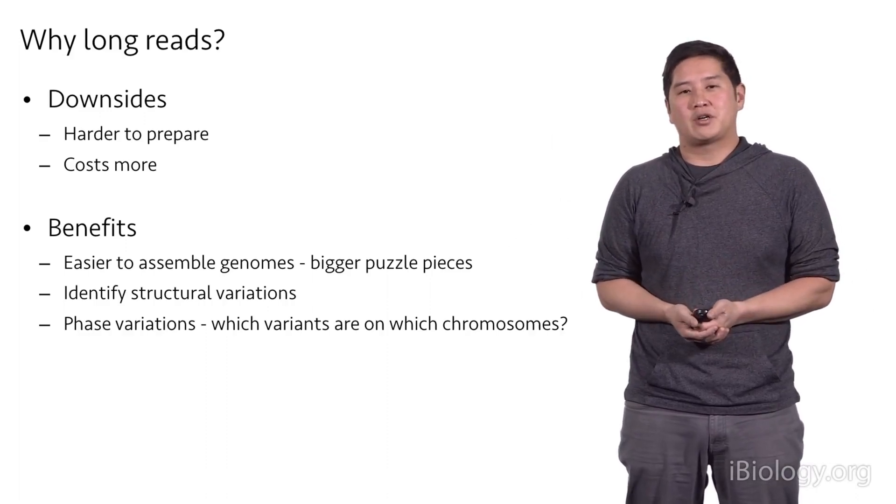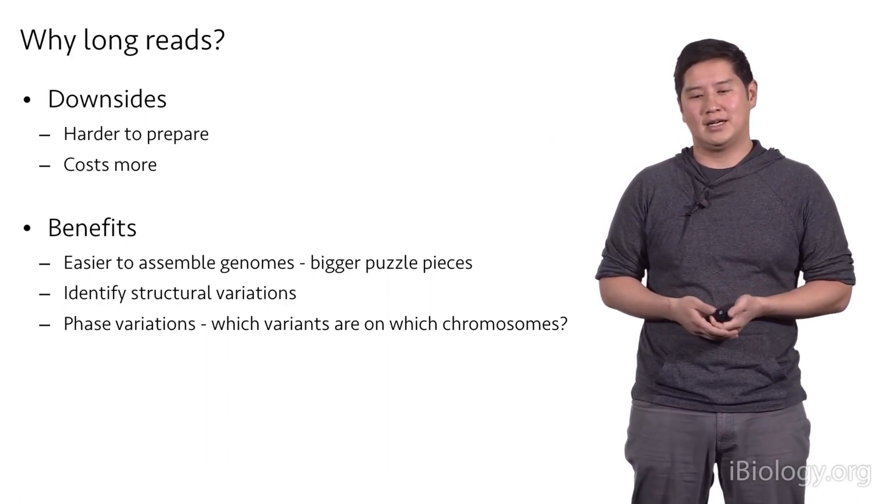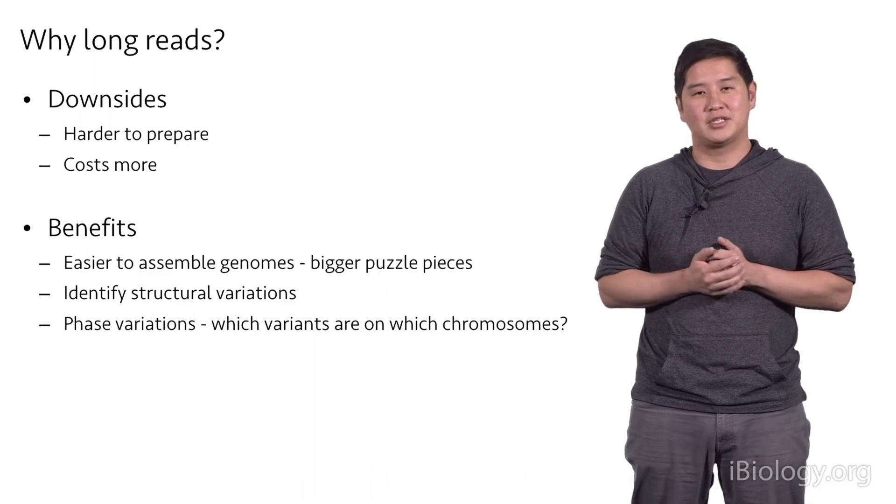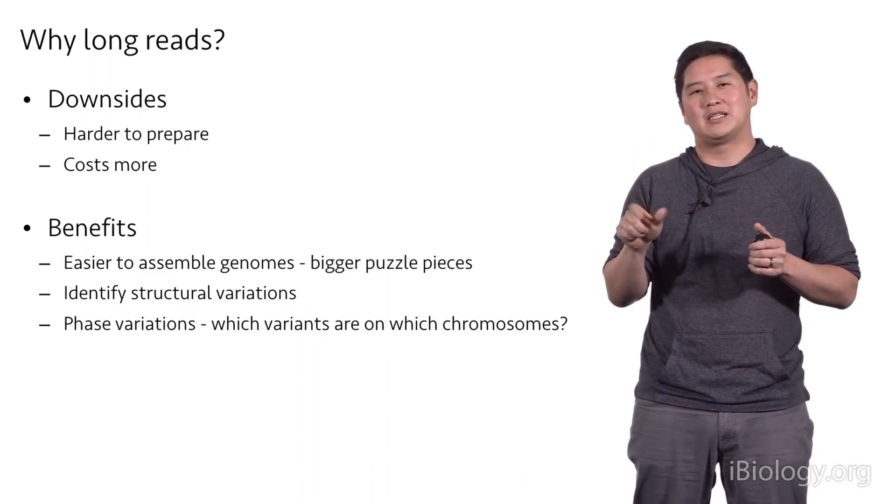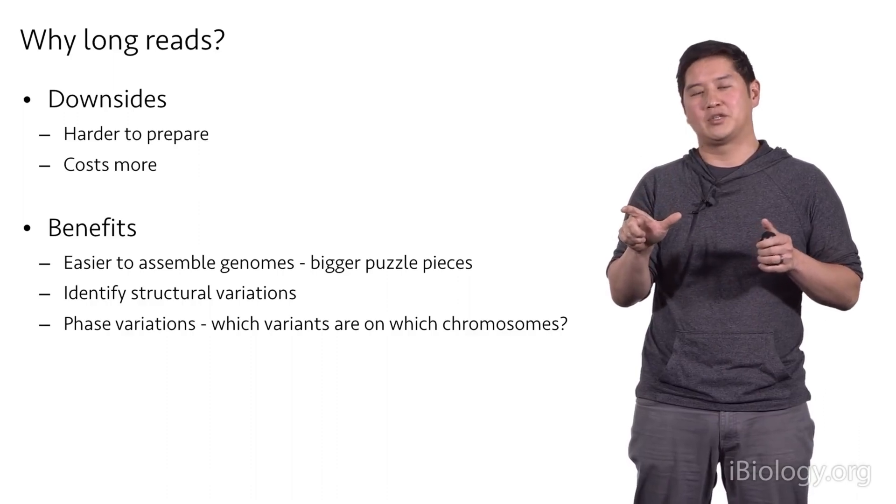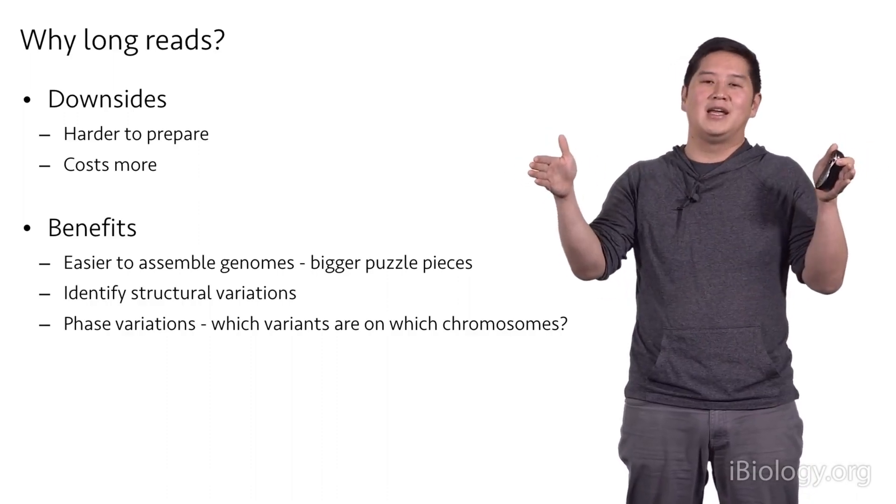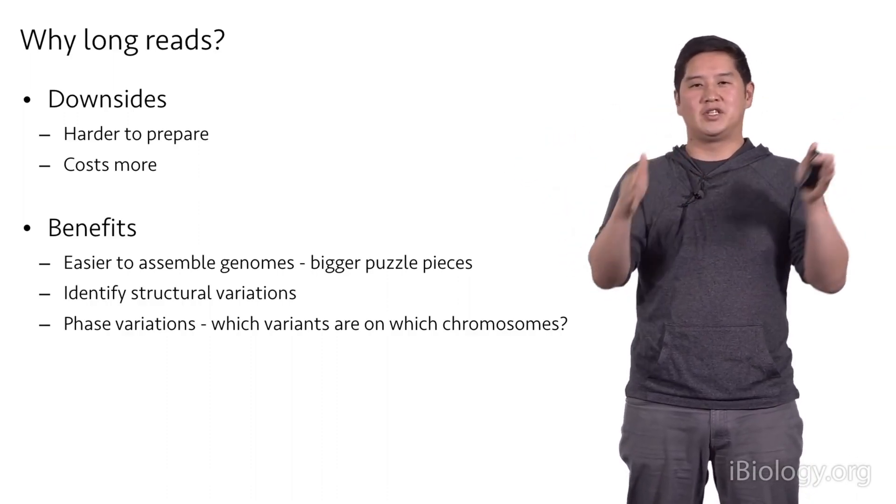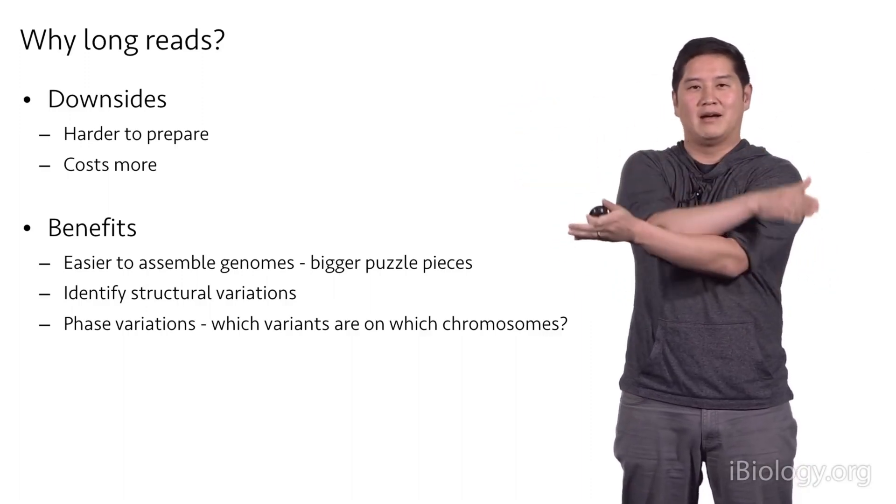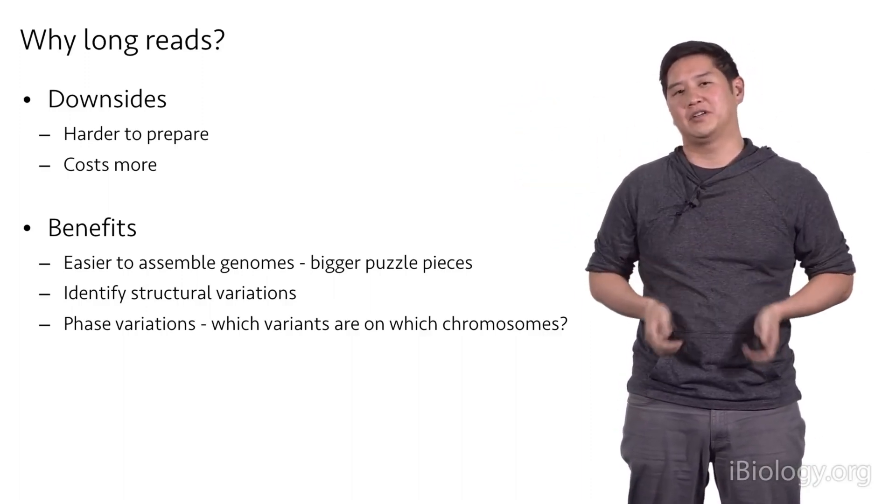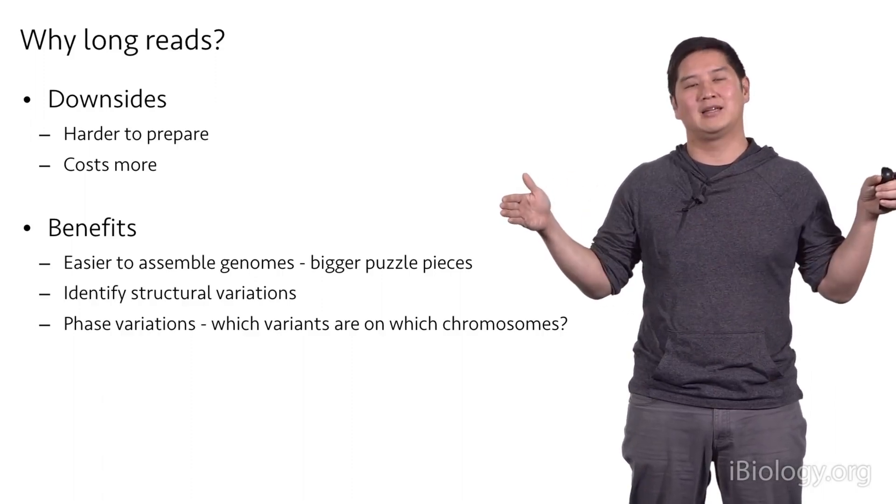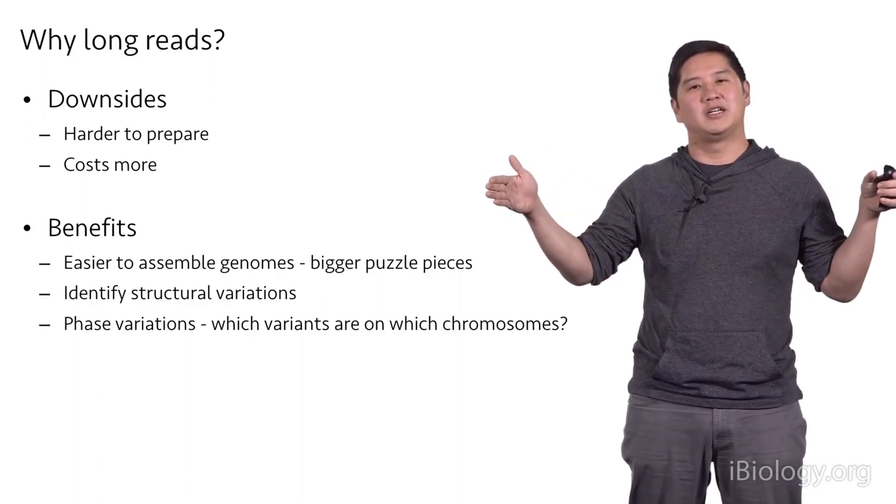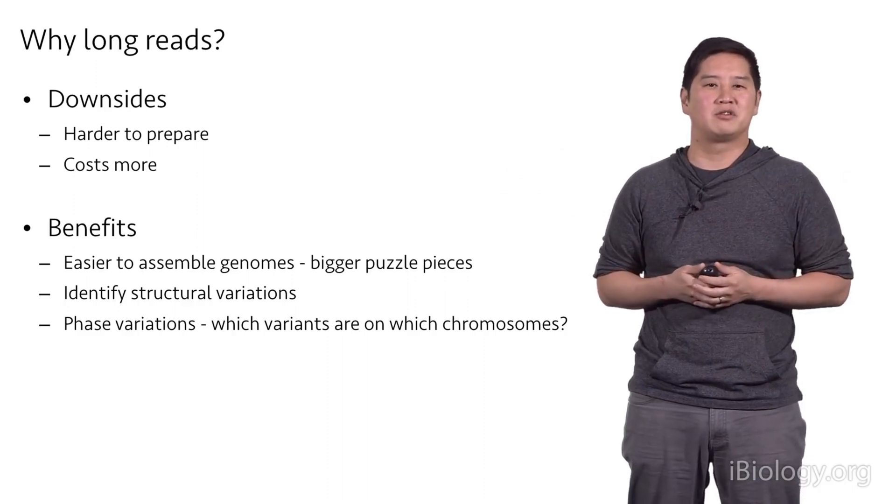It's also useful if you want to identify structural variations. So for instance, in a lot of human cancer samples, there aren't just single base changes in mutations. There are some that are structural variations where there are huge chunks of DNA that have been moved to different areas of the genome here or there or flipped around. And these can be very difficult to detect by short read Illumina sequencing. But if you have really long read sequencing, you can span these changes and then really easily identify the structural variations.